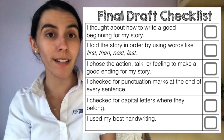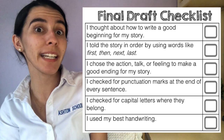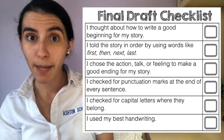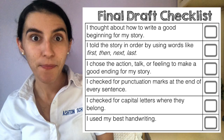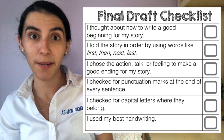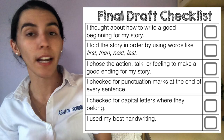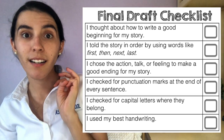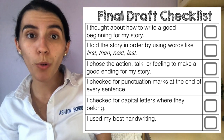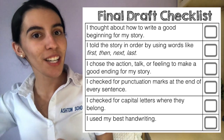The very first point on the checklist says: I thought about how to write a good beginning for my story. So does your story have a good beginning? If it does, check — you did that. If it doesn't, make sure you go back and write a good beginning. The second point: I told the story in order by using words like first, then, next, last — maybe you used the word finally. If you wrote your story in order and used some of those words, then check, you did that.